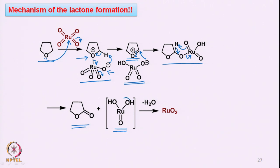This species then undergoes oxidation to form the corresponding lactone and a ruthenium species. This ruthenium species loses water to form ruthenium dioxide. So ruthenium tetroxide has been converted to the corresponding lactone. This is how the reaction occurs and it is a very useful reaction, as we had seen from different types of examples.